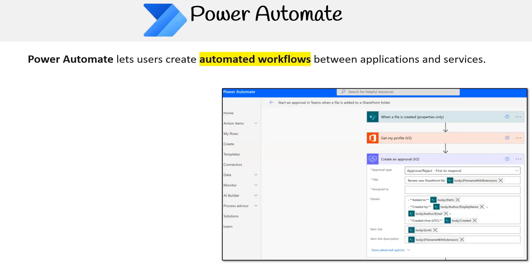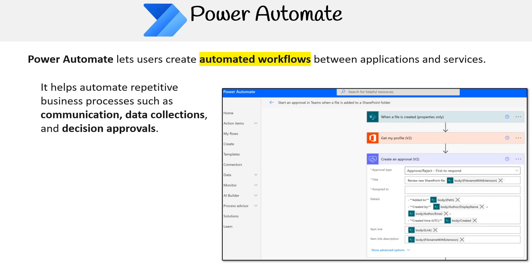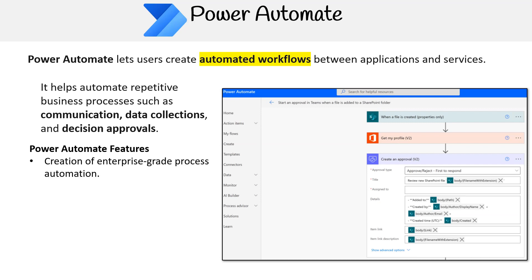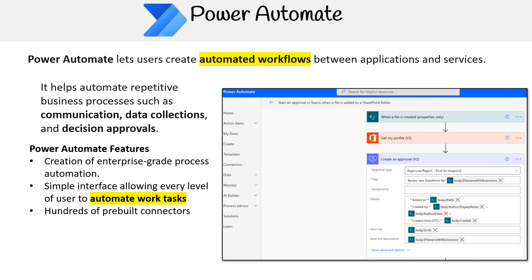Power Automate lets users create automated workflows between applications and services. It helps automate repetitive business processes such as communication, data collections, and decision approvals. Power Automate features creation of enterprise-grade process automation, a simple interface allowing every level of user to automate work tasks, hundreds of pre-built connectors, it can utilize AI Builder, and it predicts outcomes to improve performance.